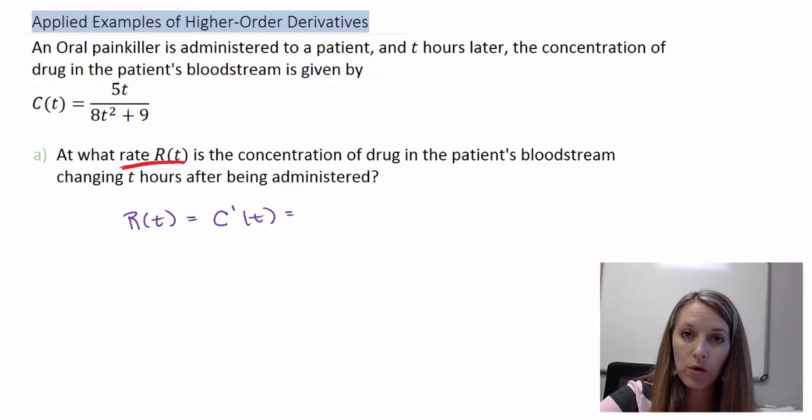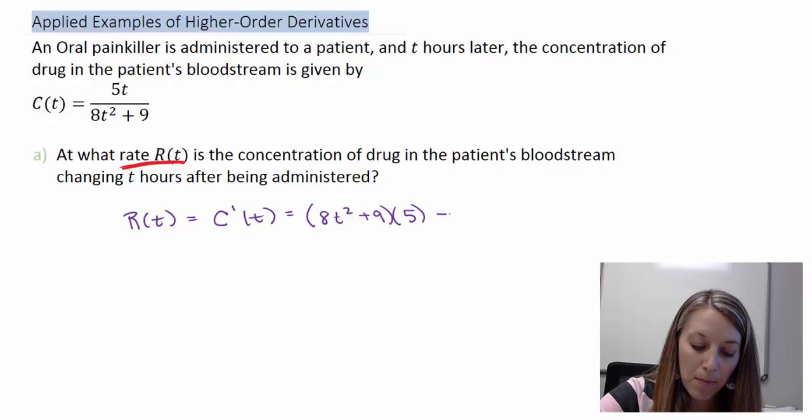Notice we have a quotient or a fraction here, so we're going to have to use the quotient rule. We're going to do low D high, so the original of the low times the derivative of the high minus high D low or the original of the high times the derivative of the low all over the low squared.